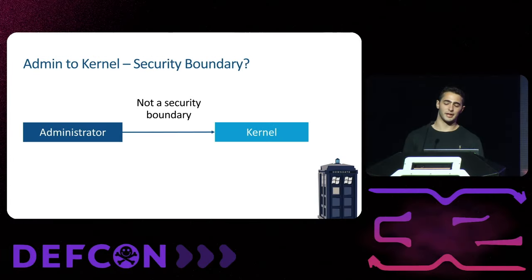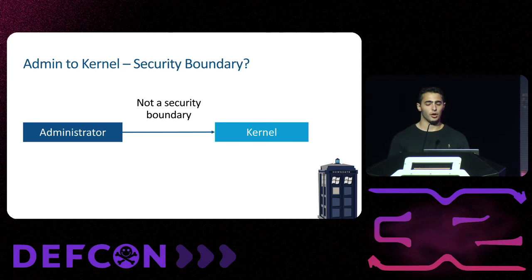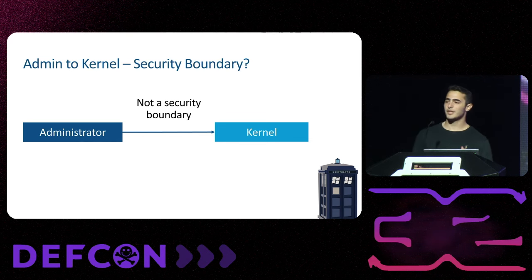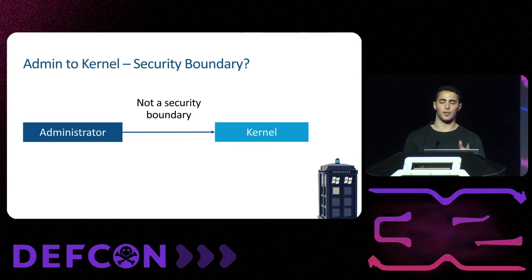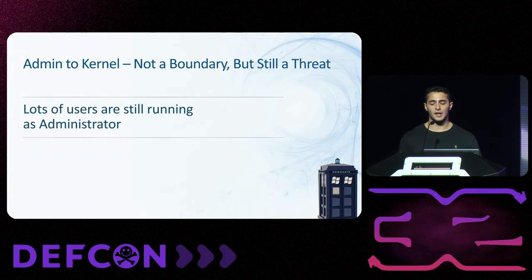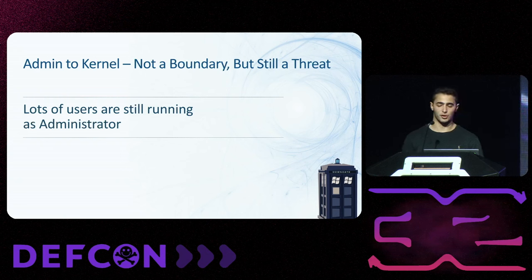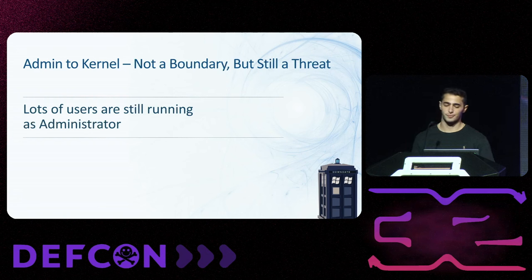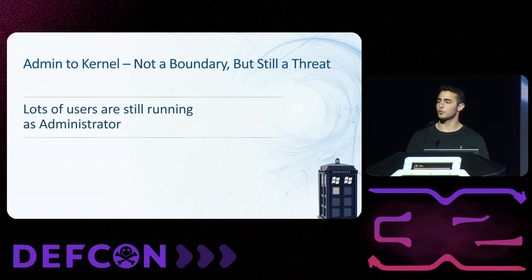If we check for updates, you can see we are fully up to date. So what did we achieve so far? We gained perfect downgradability and kernel code execution. Our starting point was administrator, so this was an administrator-to-kernel elevation. Administrator to kernel is not considered a security boundary in Windows, but gaining kernel code execution is still a serious threat — it gives much more functionality than administrator, and many users run as administrators by default.